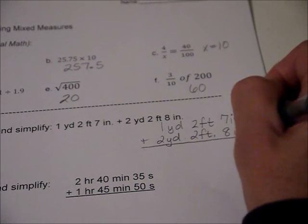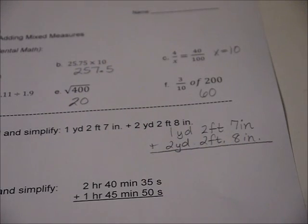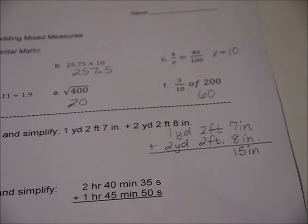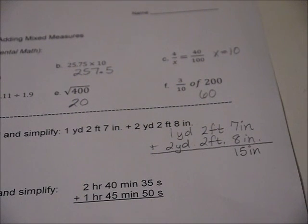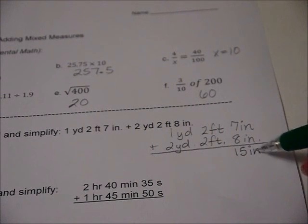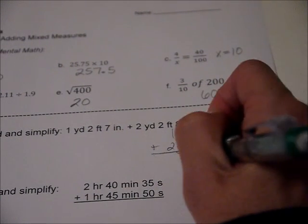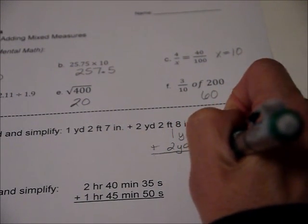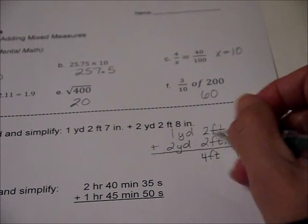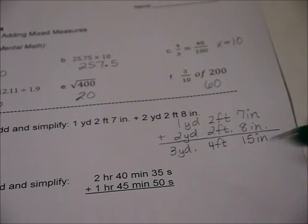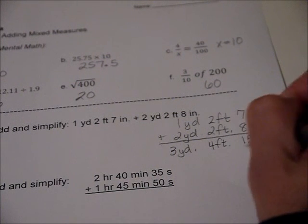Go ahead and start on the right-hand side like we usually do. So we've got fifteen inches. Well, right there is an issue - not an issue, it's just not simplified because it takes twelve inches to make a foot. So now we're already over a foot here, so that's going to have to be taken care of. And we got four feet, and it takes three feet to make a yard, and we've got three yards.